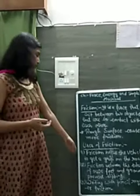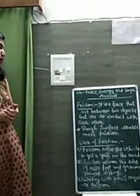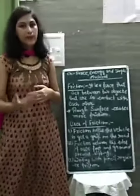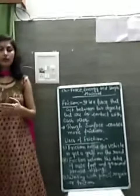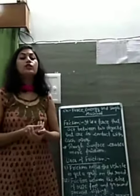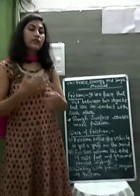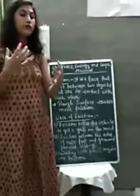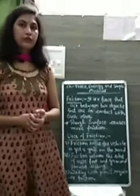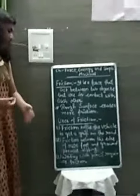Another use of friction is between the sole of our shoe and the ground, which also prevents slipping. When we walk on the road, there is a grip between our shoe and the road. The friction between the road and the sole of our shoe prevents us from slipping.